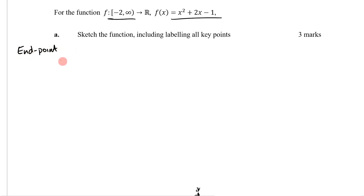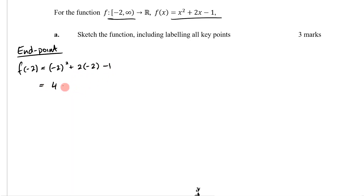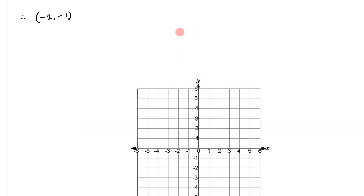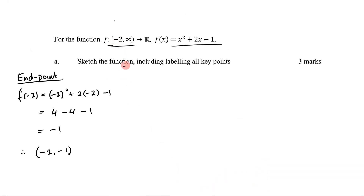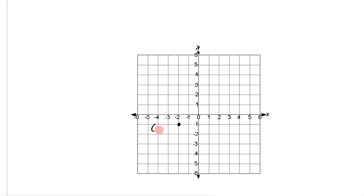To find the endpoint, I'm going to substitute in x = -2. So f(-2) is equal to (-2)² + 2(-2) - 1, which equals 4 - 4 - 1, which is -1. That means my endpoint is (-2, -1). I can now plot that on the graph — it's a closed circle because I have a square bracket, meaning it's included. I'll label it with the coordinate (-2, -1).